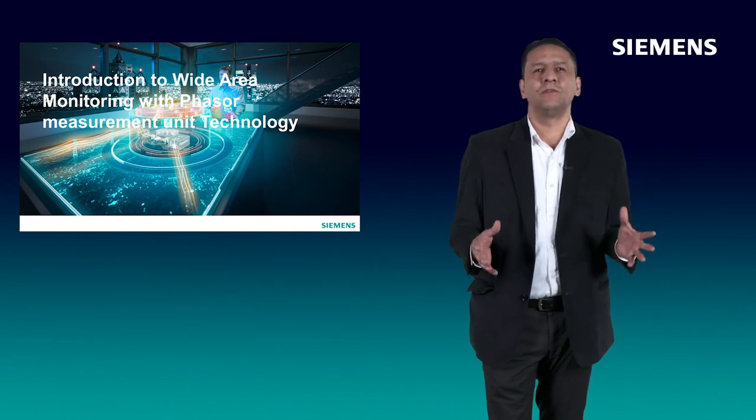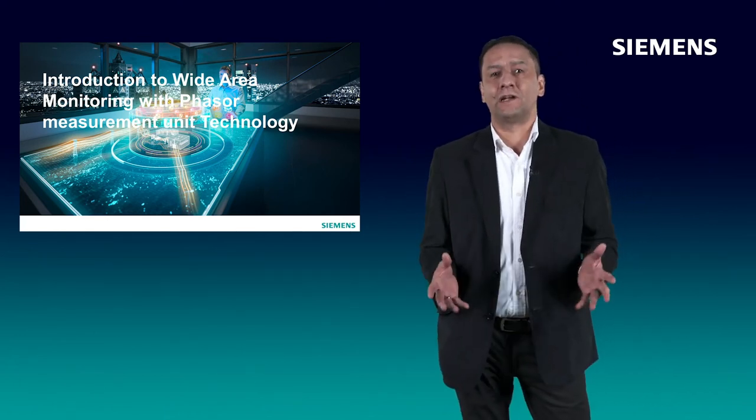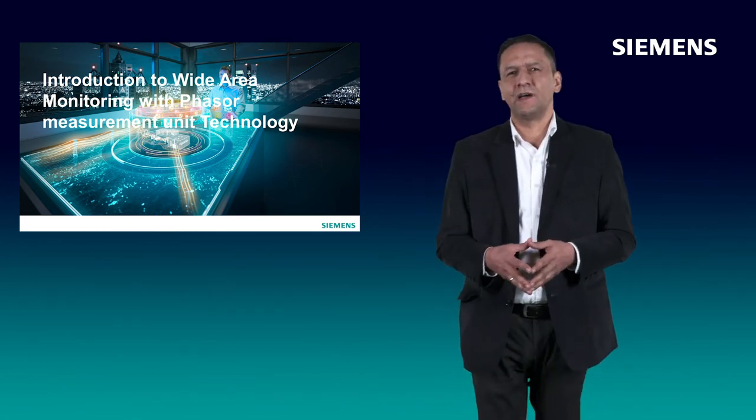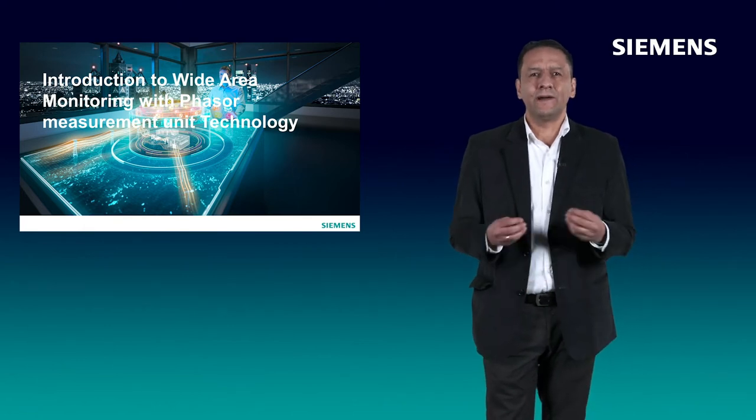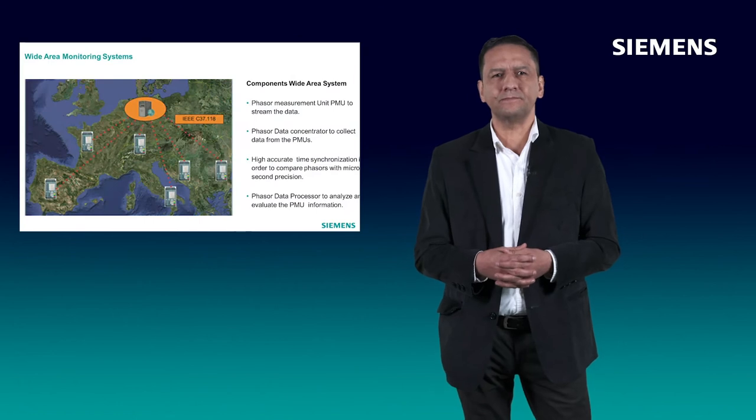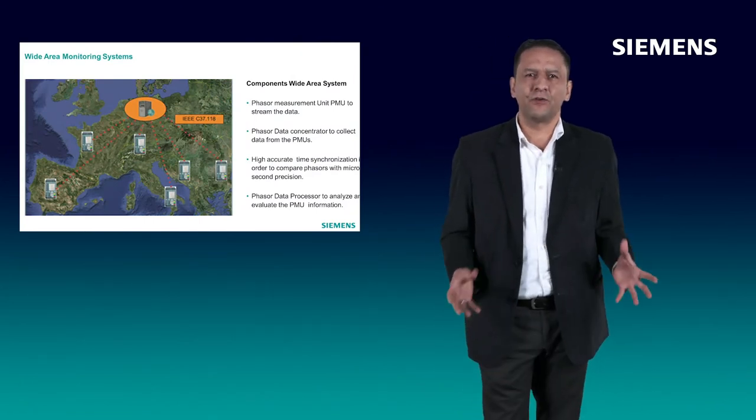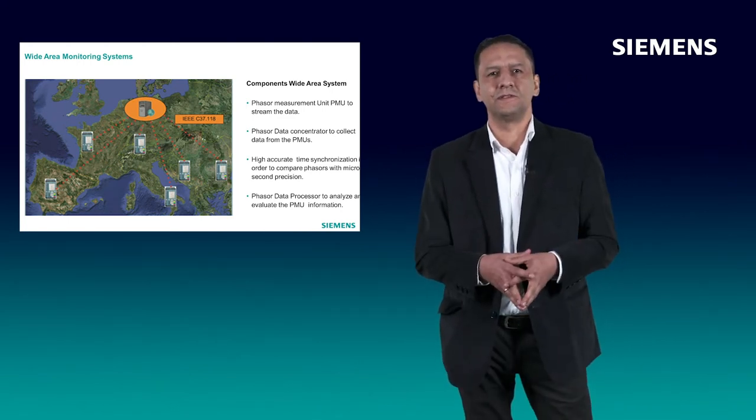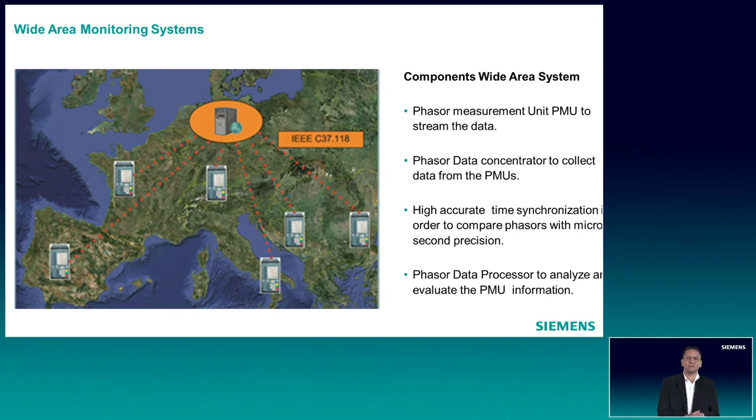Now, let's see how to solve and help customers overcome these new challenges. Here we introduce the concept of Wide Area Monitoring Systems and the main components and benefits. A Wide Area Monitoring System collects information related to the angle and magnitude for voltage and current in real time from different locations. As I show here in the map, the values are streamed to a central system with a sample rate of at least 10 samples per second or bigger.